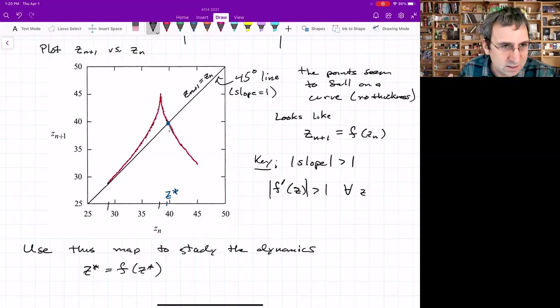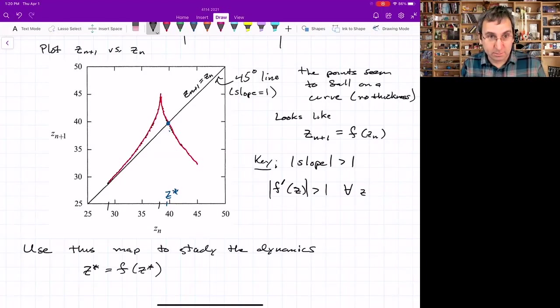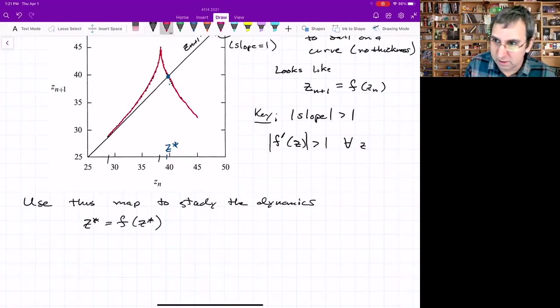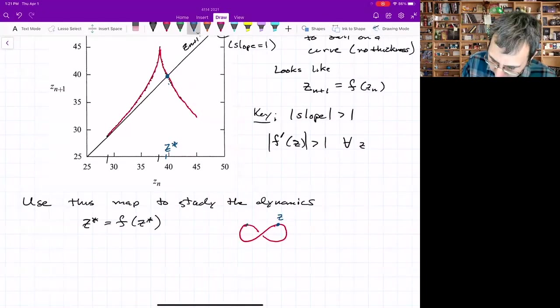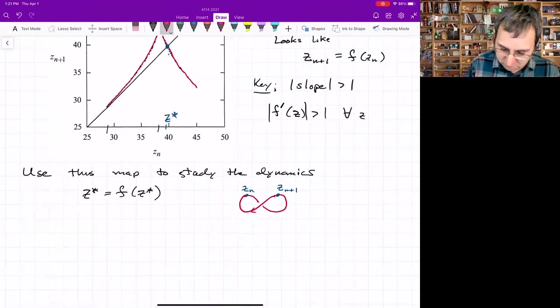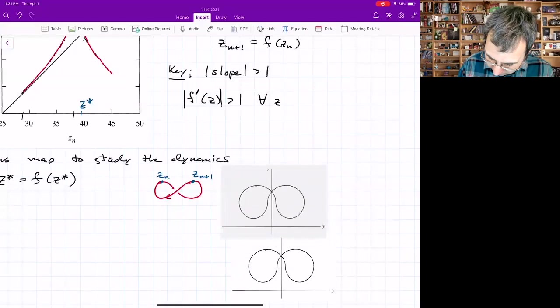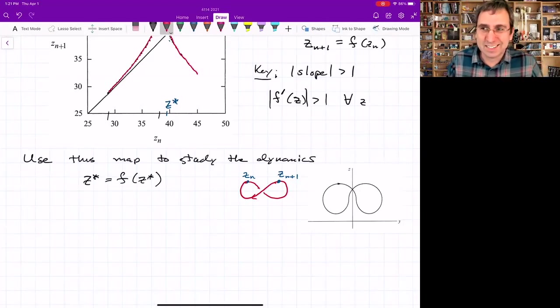This 45 degree line, this is the line where Z_{n+1} equals Z_n. So where that curve would intersect the red curve, that's where we would have a fixed point of this map. I'll highlight it here and call that Z star. So we could use this map to study the dynamics. But it suggests that there's a periodic orbit. Whatever trajectory would correspond to that point is going to be periodic.